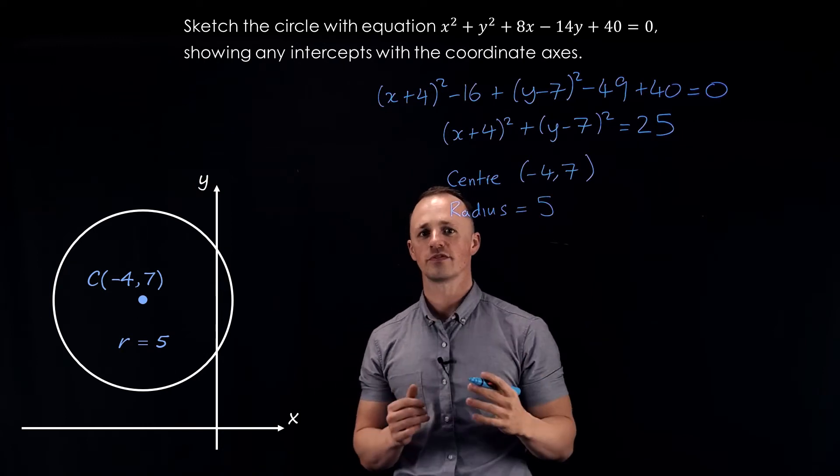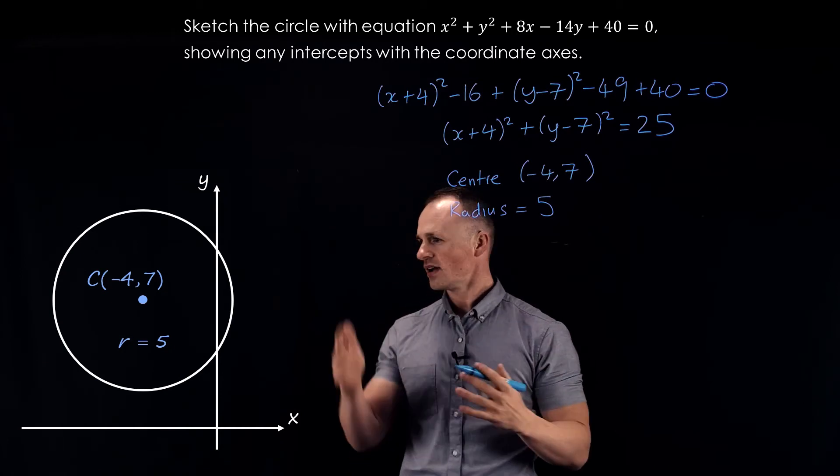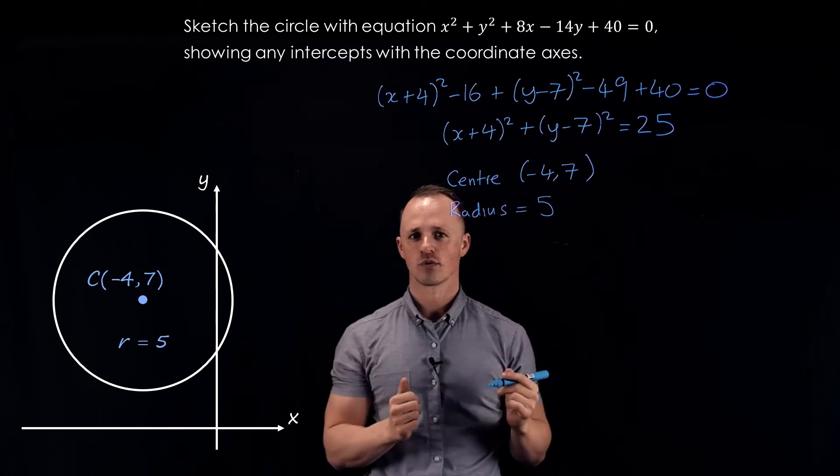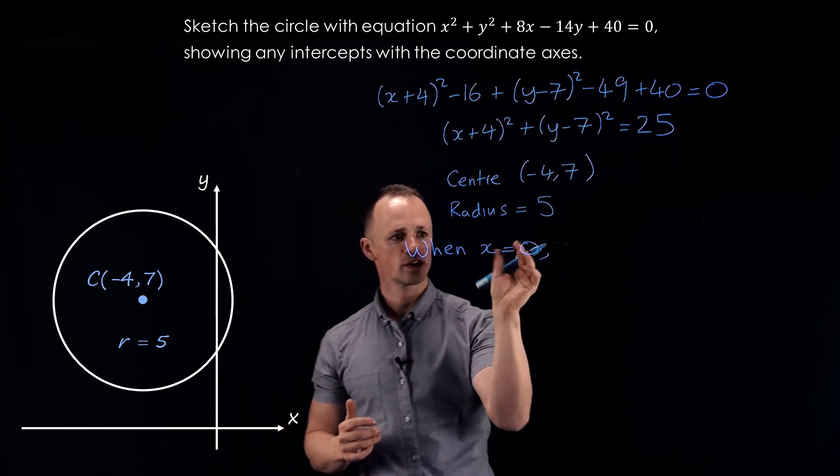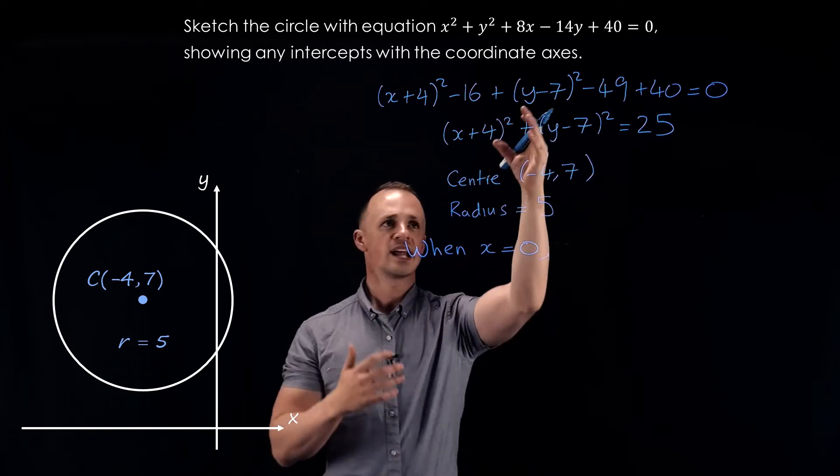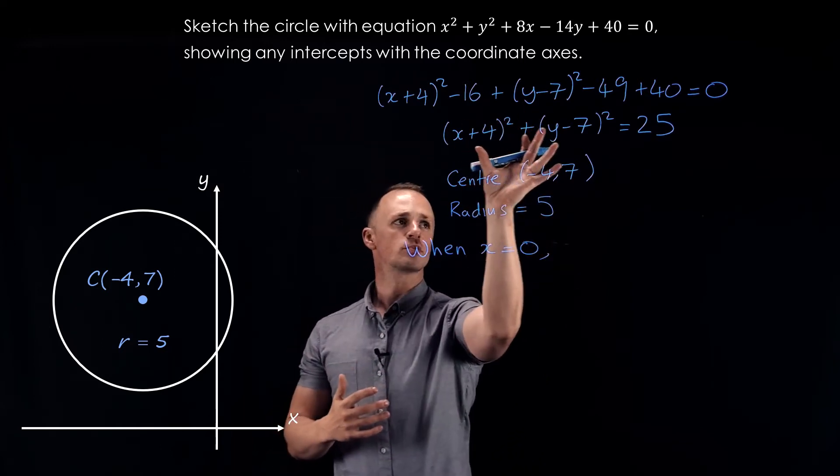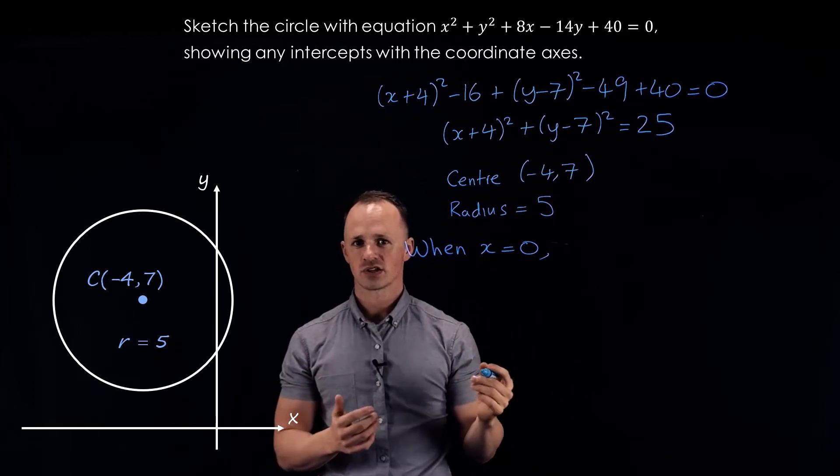But we can go a little bit further than that, and we can find what those y-intercepts are. So to do that, when it cuts the y-axis, the x coordinates have to be 0. So we're going to sub x equals 0 into our circle equation. Now you can actually sub it into any version of that you like. I'm going to sub it into the completed square format because that generally will make it easier to solve.